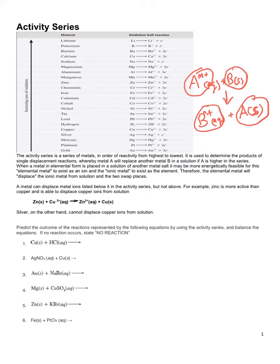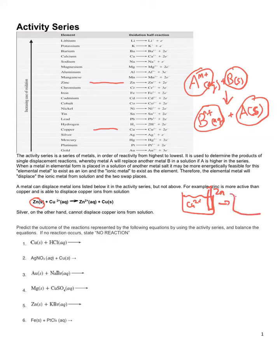For example, zinc is more active than copper. Zinc is higher in the series, and copper is below it. So zinc metal will displace copper ions from solution. If we have a solution with some copper ions and we put a piece of zinc in, what will happen over time is that the zinc will migrate out of the metal to give us zinc ions in solution, and those zinc ions will be replaced by copper that precipitates as a solid.